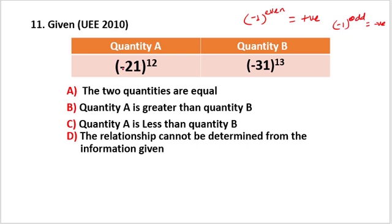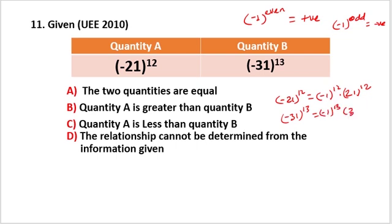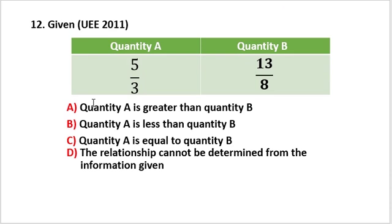For example, minus 21 to an even power is positive; minus 21 to an odd power is negative. Minus 3 to the power of 13 times minus 1 to the power of 12 — no matter how large the values, minus 3 to the power 13 times 3 to the power 12 means quantity A is greater than quantity B.